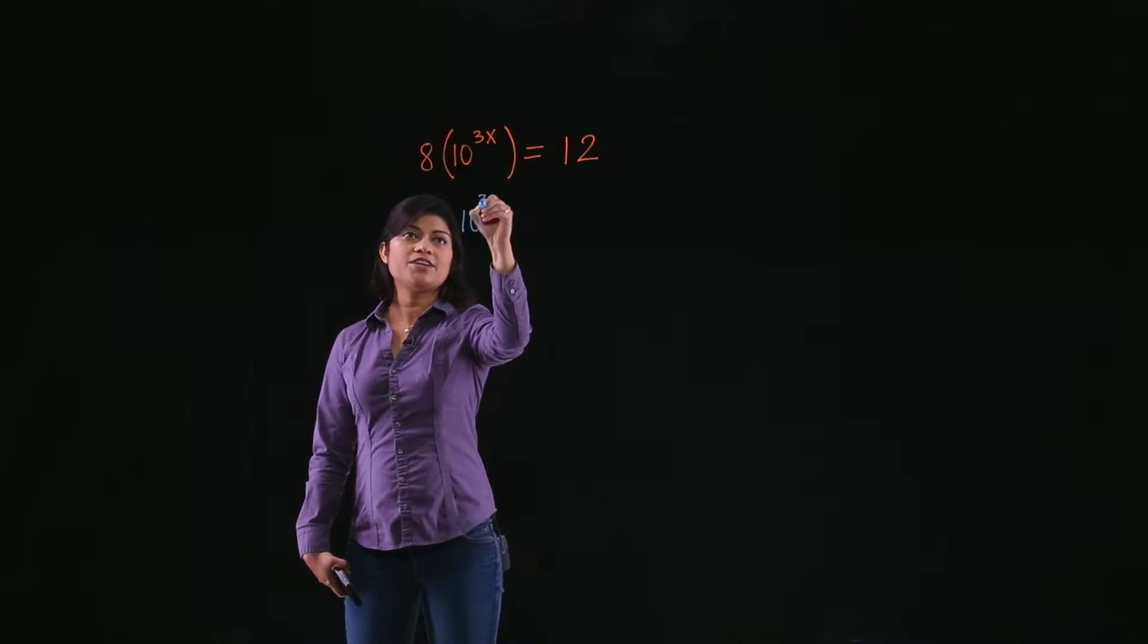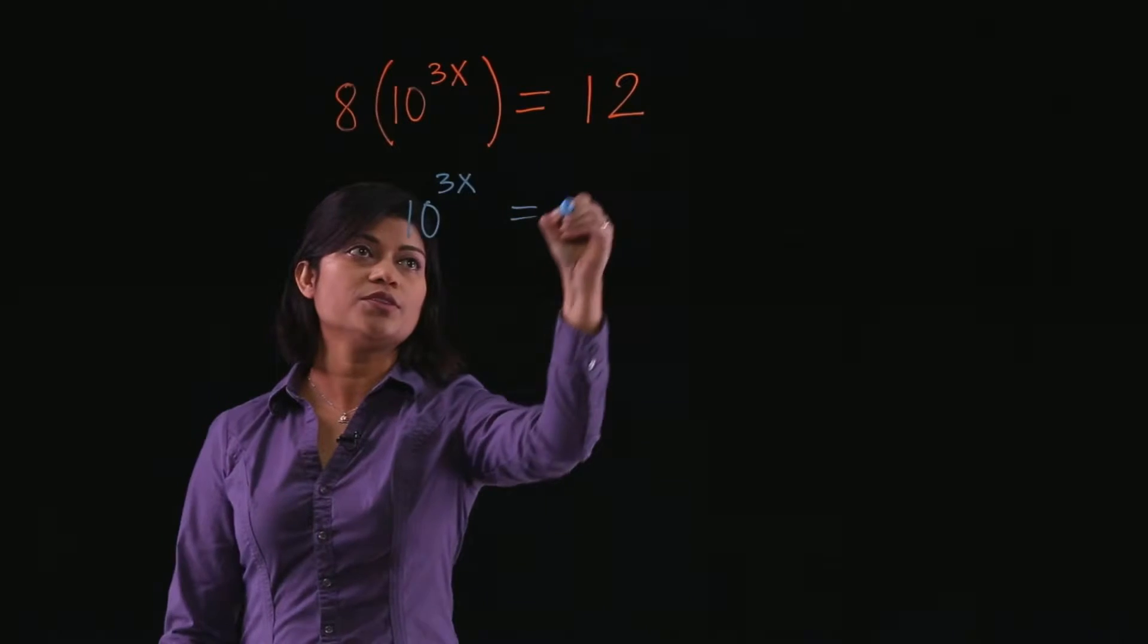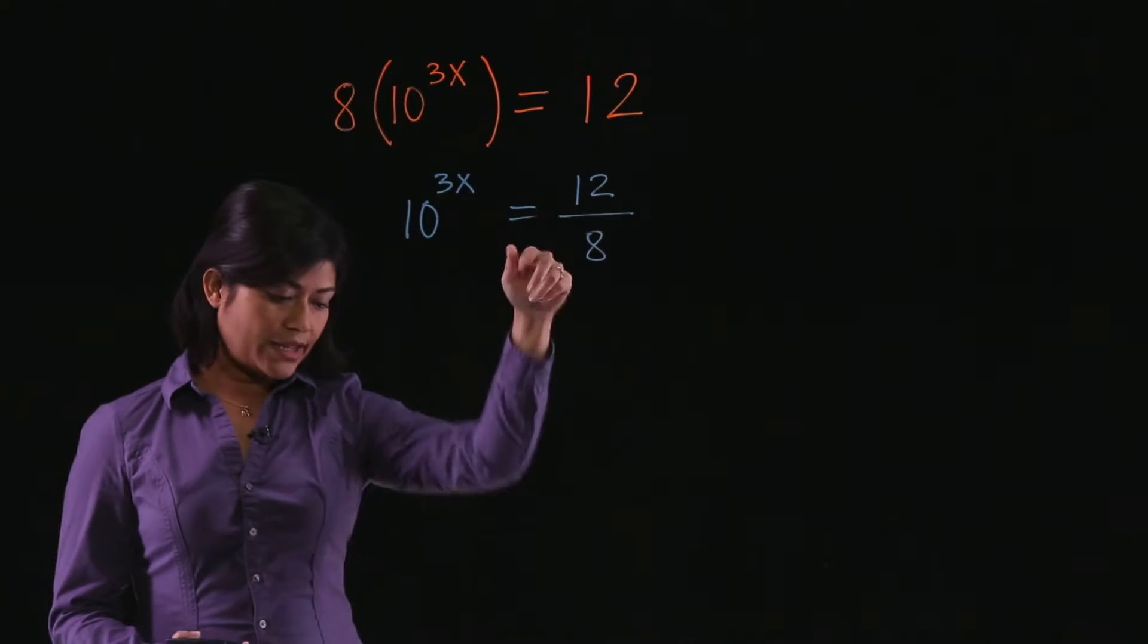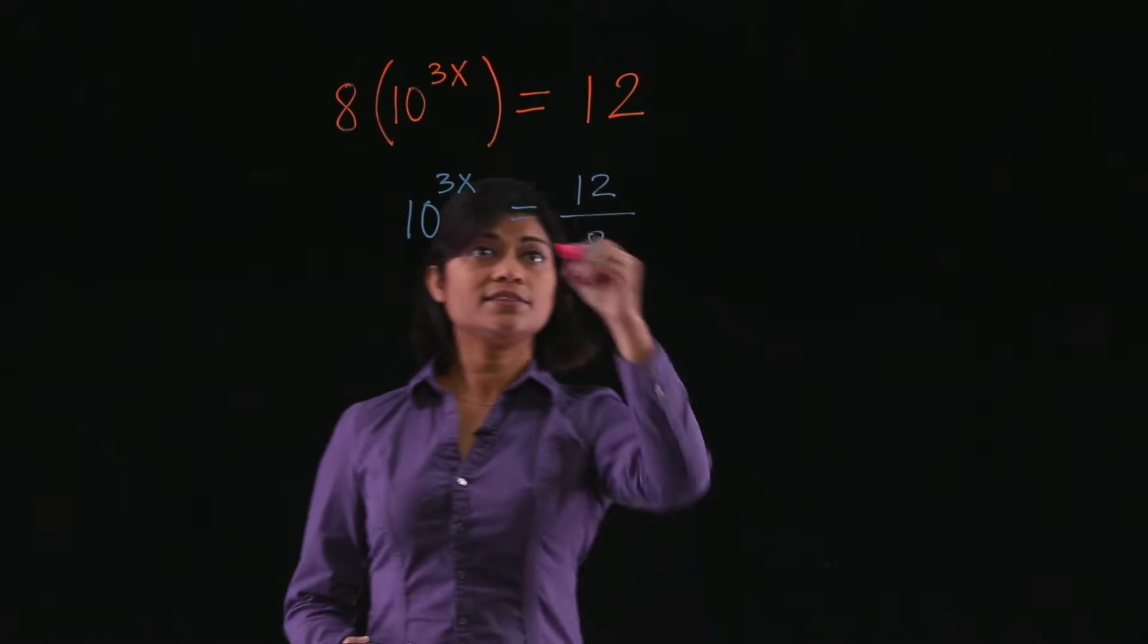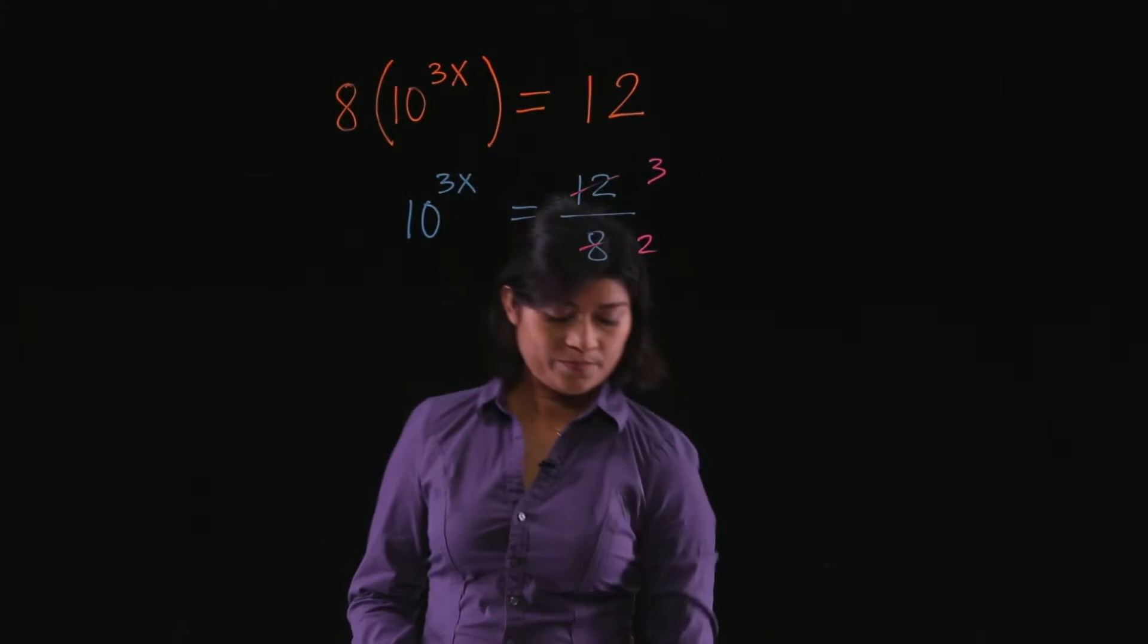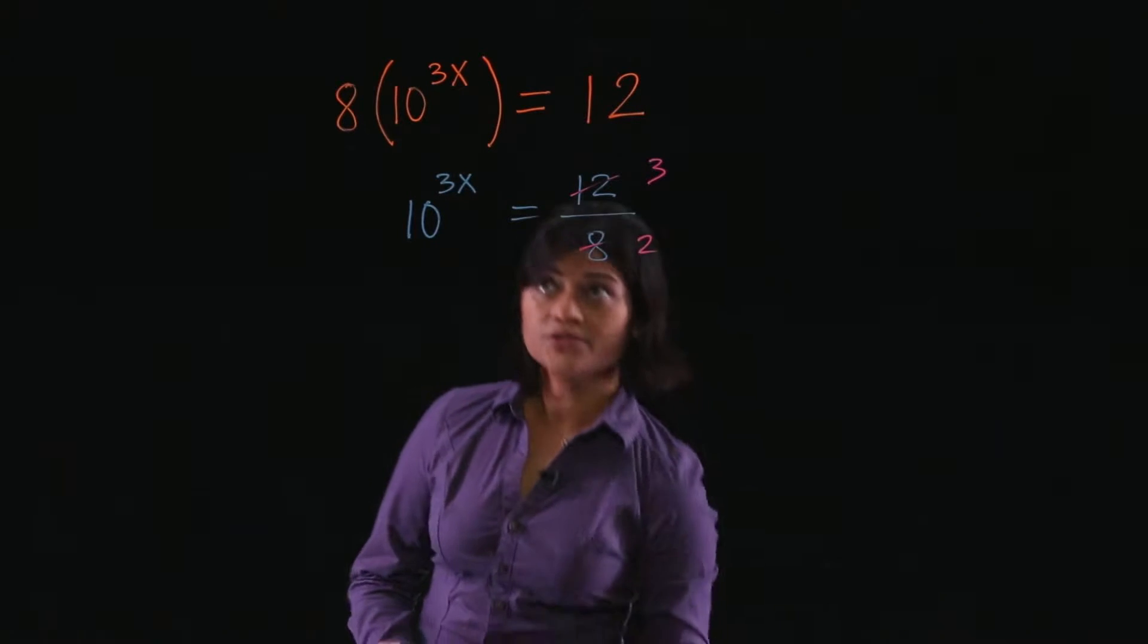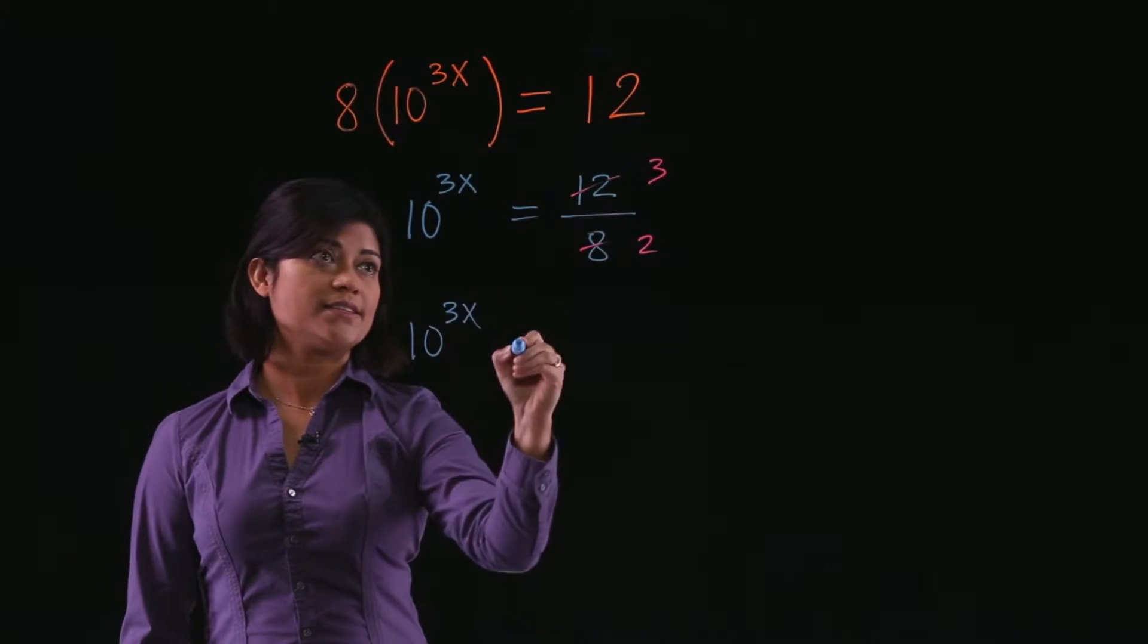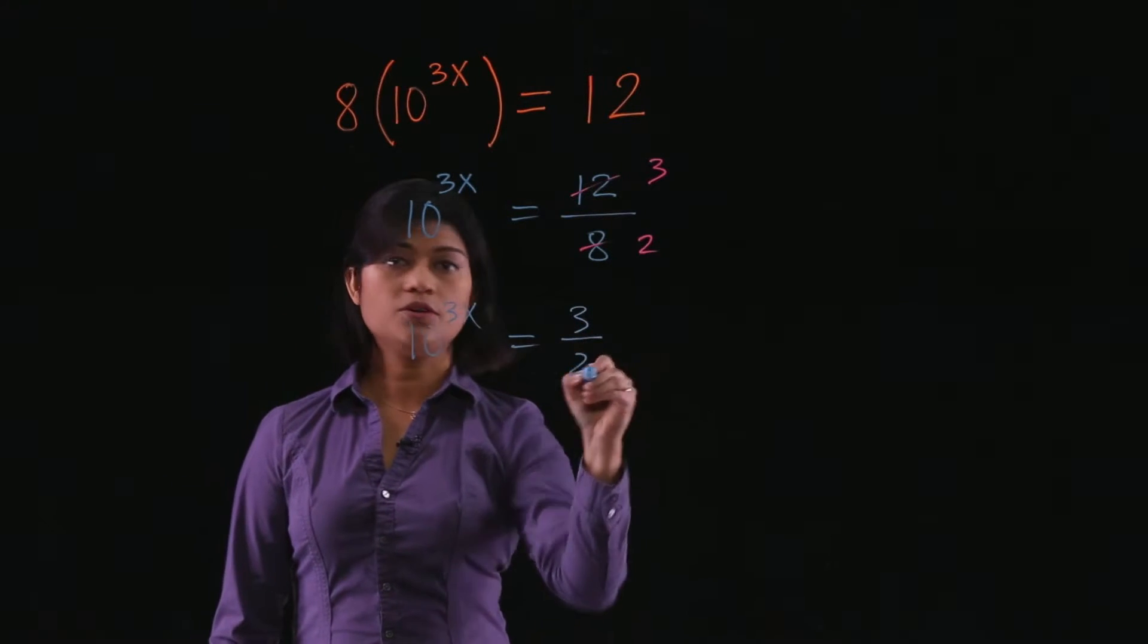So you have 10 to the power 3x is equal to 12 divided by 8. And 12 divided by 8 cancels, so it'll be 3 halves. All right. So now we have 10 to the 3x is equal to 3 over 2.